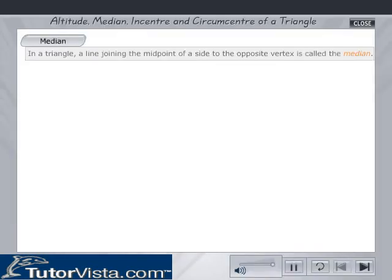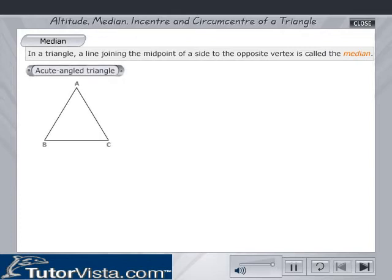Median of a Triangle. In a triangle, a line joining the midpoint of a side to the opposite vertex is called a median. Observe how you obtain the median for different types of triangles.